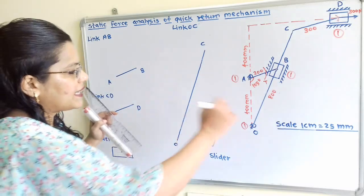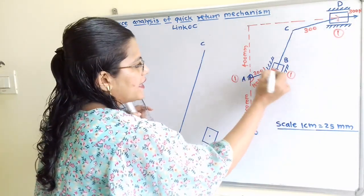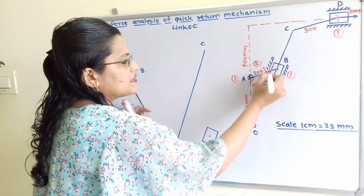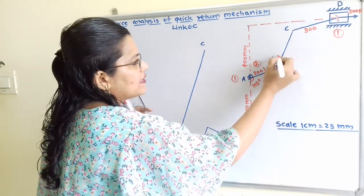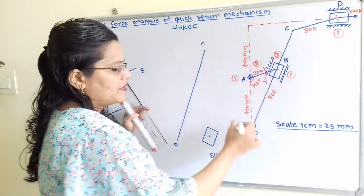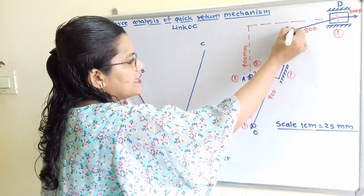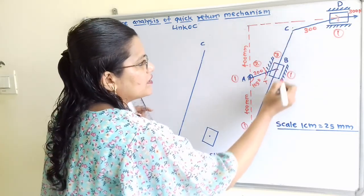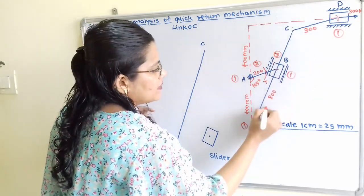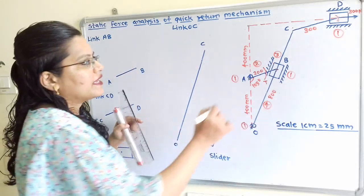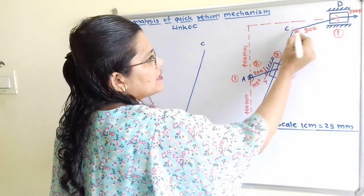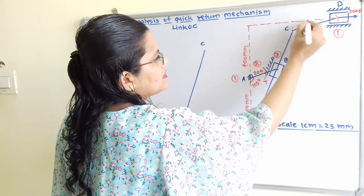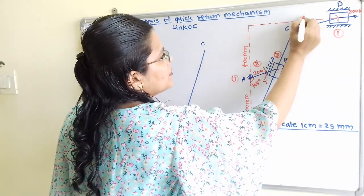Link AB is given number 2. The slider at point B is given number 3. The whole link OC is given number 4. Then from C to D is also a link, given number 5.